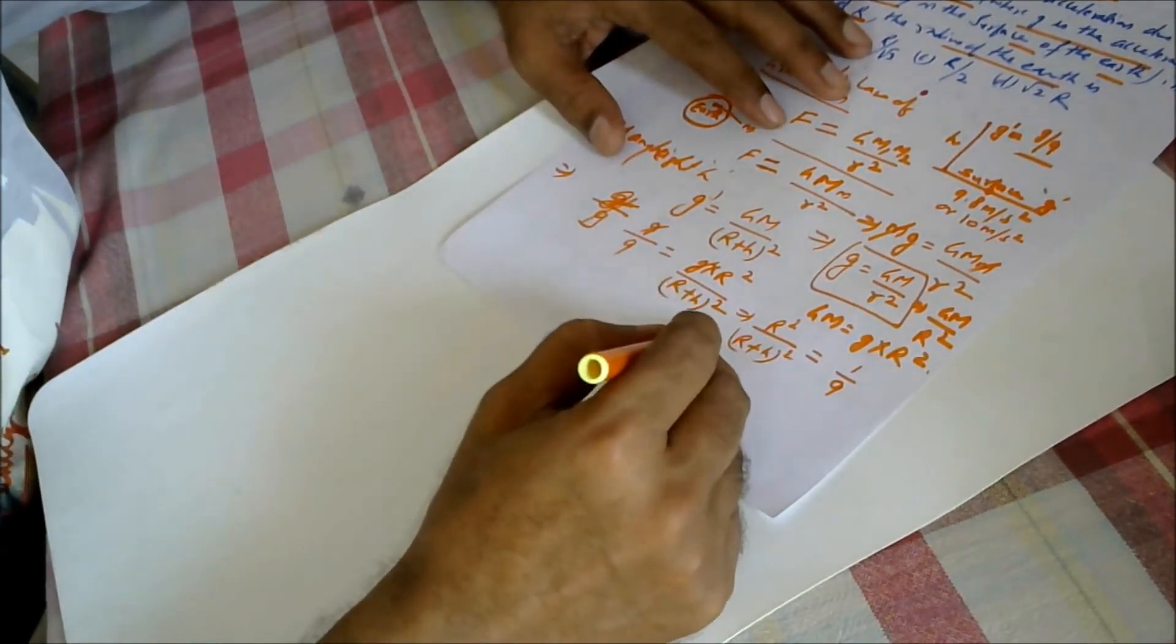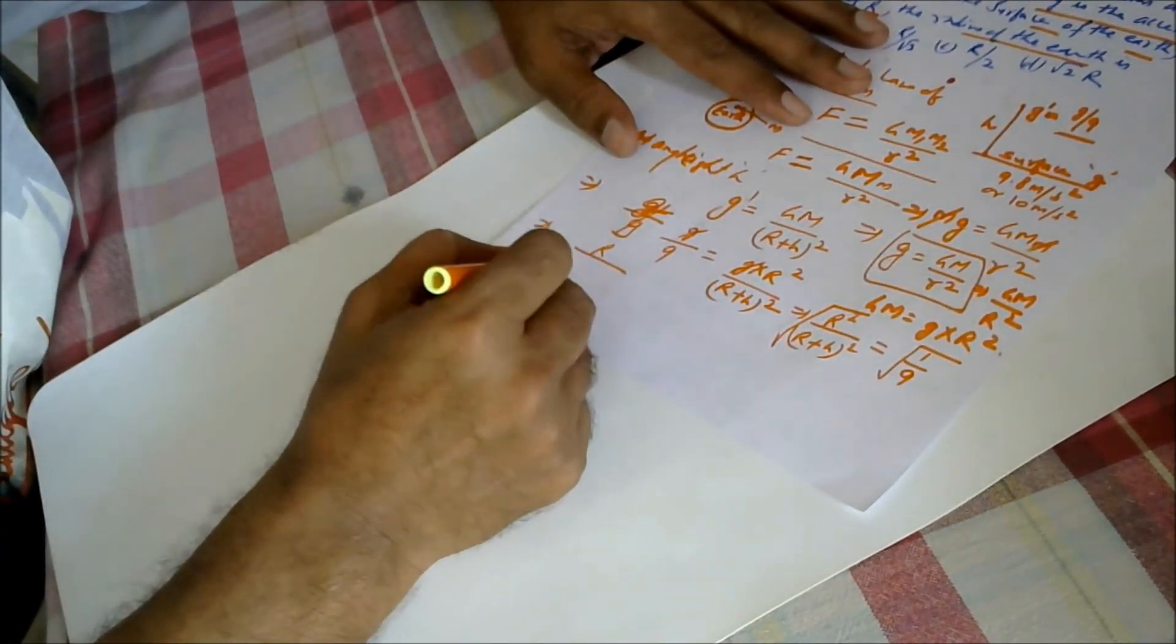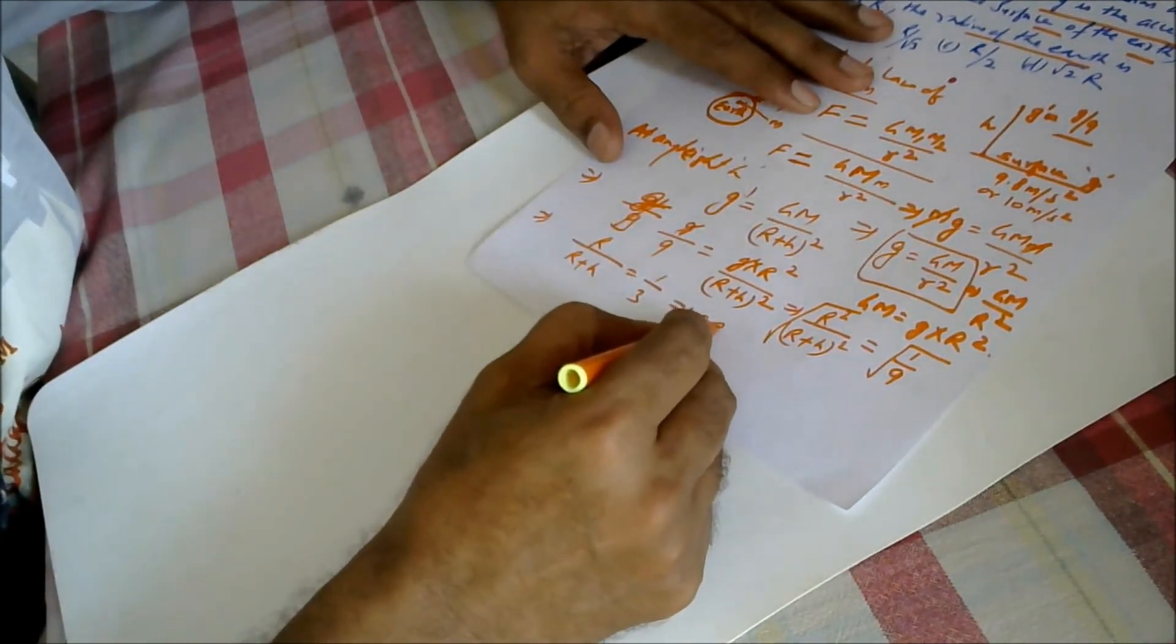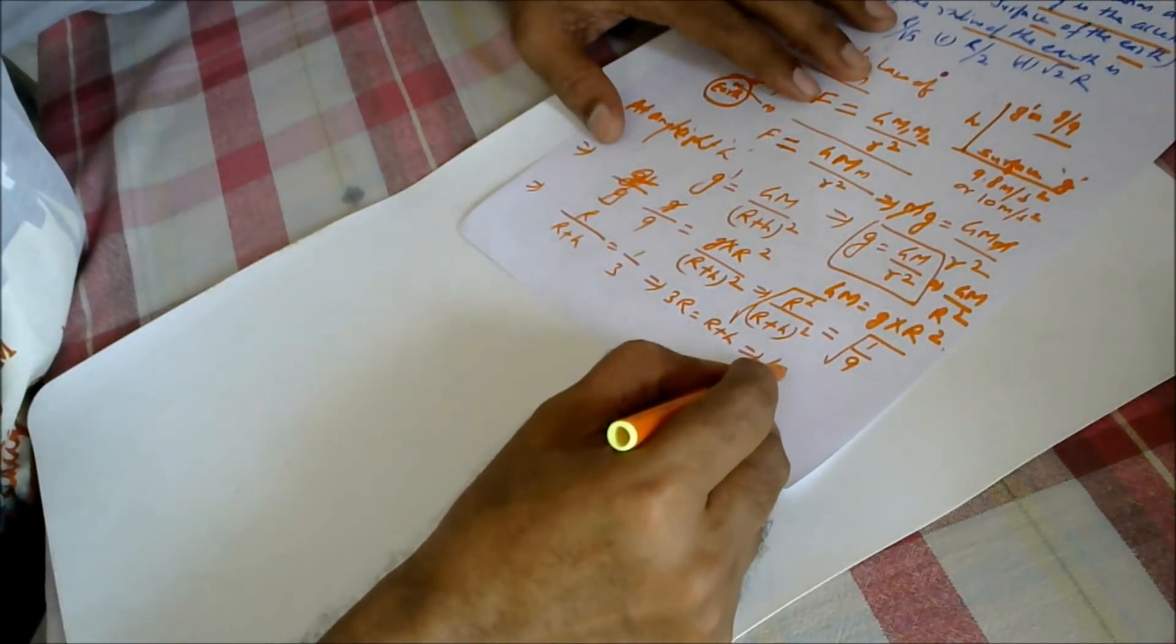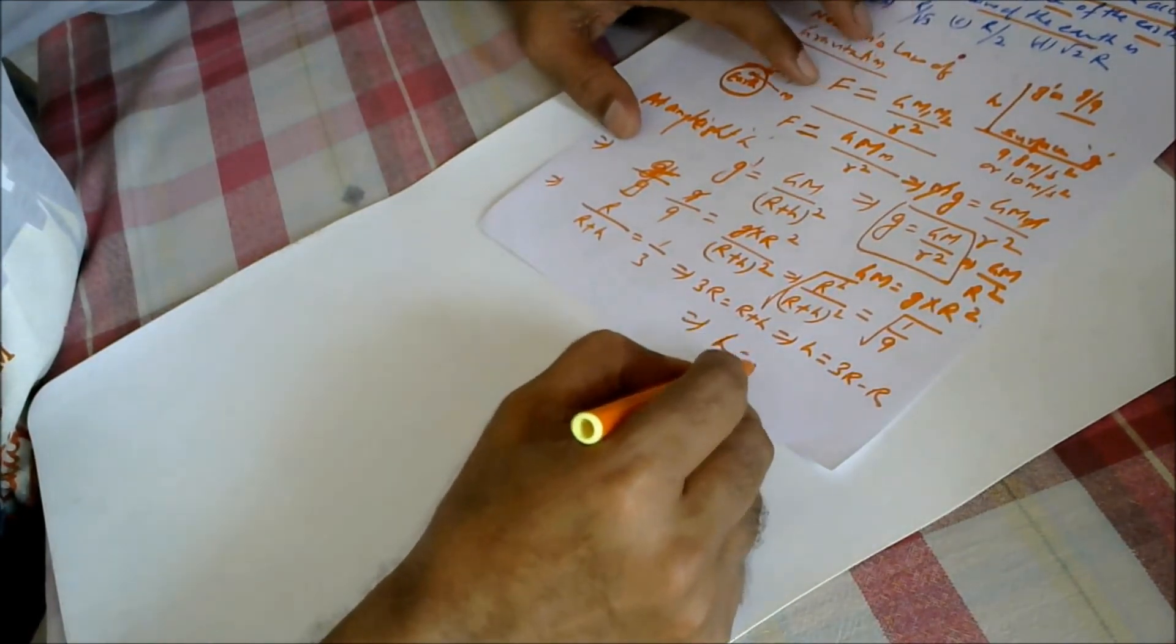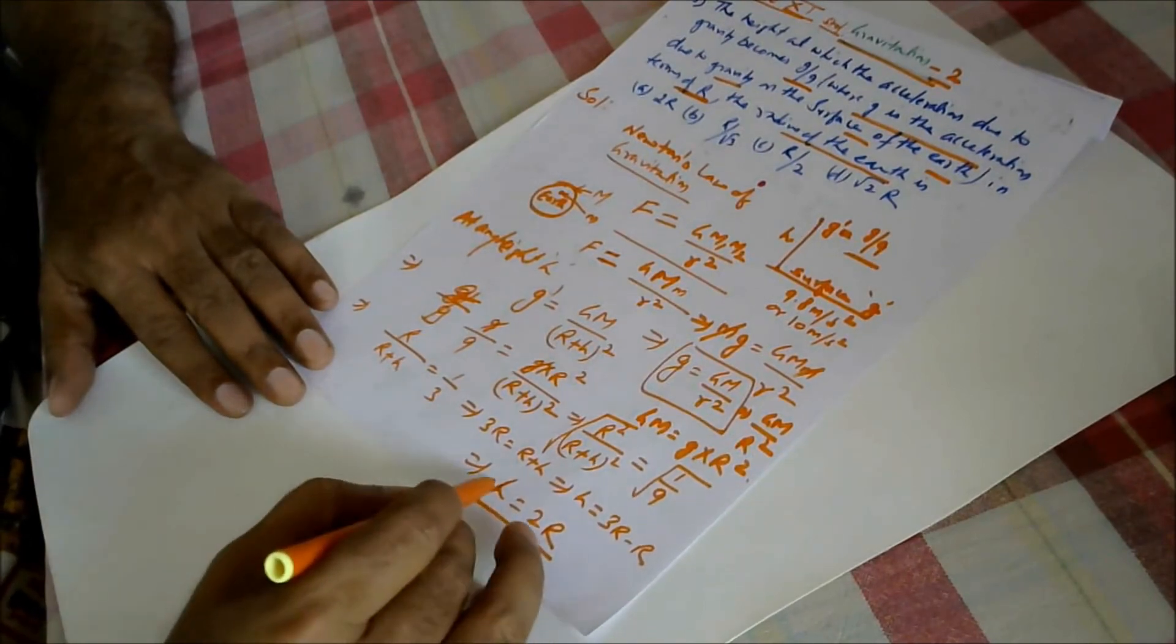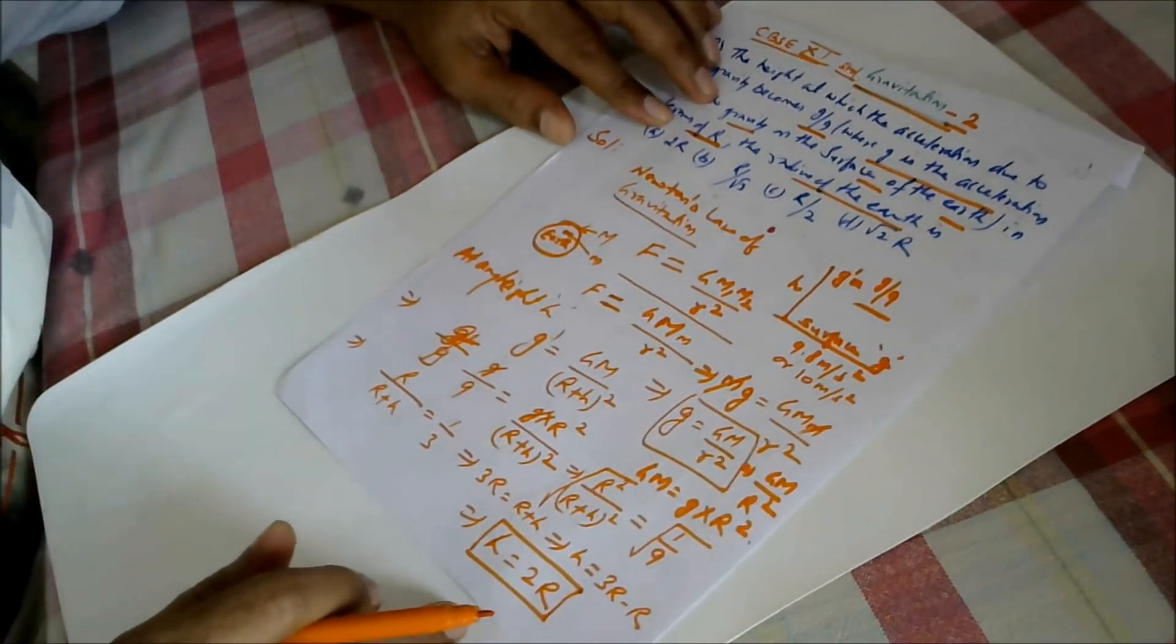Taking square root both sides, we get r by (r plus h) equals 1 by 3. Then we solve: 3r equals r plus h, and h equals 3r minus r, and h equals 2r. So h will be 2 times the radius of earth.